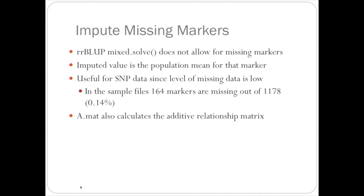The imputed value is the population mean for that marker. This is useful for SNP data since the level of missing data is pretty low. In the sample files, 164 markers were missing out of 1,178, which is only 0.14% missing. Imputation can be done without any adverse effects.